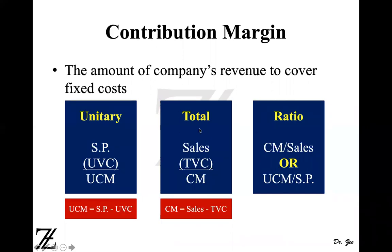In total, you can calculate by subtracting total variable cost from sales to get the total contribution margin. You can also calculate the ratio, which is calculated by dividing contribution margin by sales, or by dividing unit contribution margin by selling price. Both approaches should give you the same ratio.